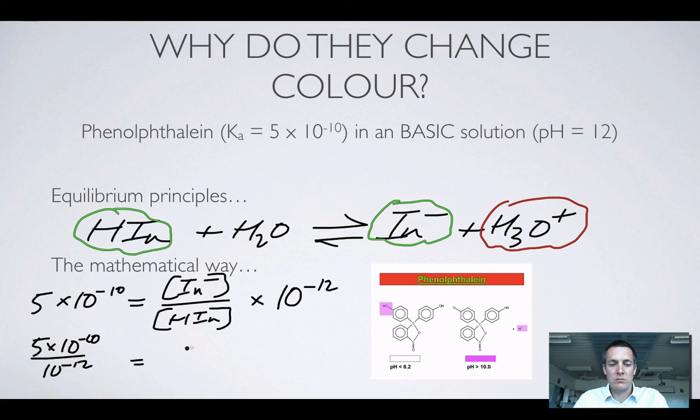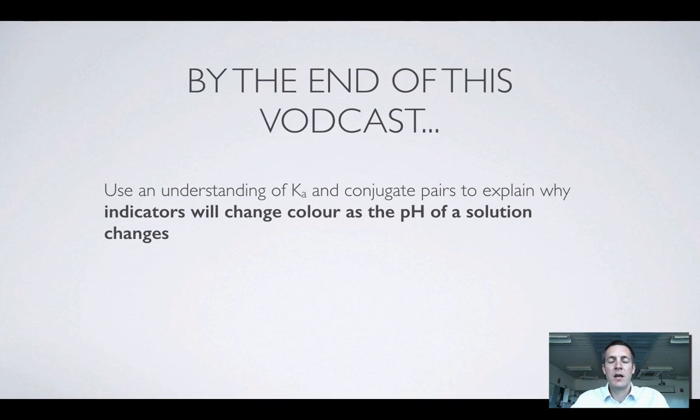And now this is equal to 5 × 10² or in other words 500. So the ratio of In- to HIn is 500 and there's a lot more of the purple form than there is of the colorless form and that's why it looks purple. So we ought to try and explain this not only in terms of the equilibrium principles which we should know from the equilibrium topic but also in a sort of more mathematical way based on what we've learned about Ka.